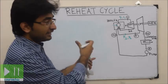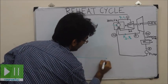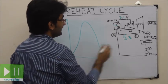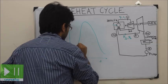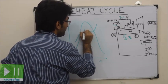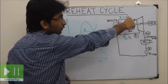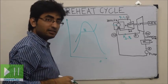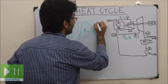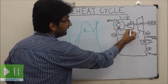Now we will understand this through a TS diagram, with T on the ordinate and S on the abscissa. This is the dome of the TS diagram. First, let us consider the constant pressure heat addition at pressure P1 inside the boiler. After the boiler, the steam goes through the high pressure turbine, where expansion occurs until the saturated vapor line. Point 1 is the inlet to the high pressure turbine, and point 2S is the exhaust of the high pressure turbine.